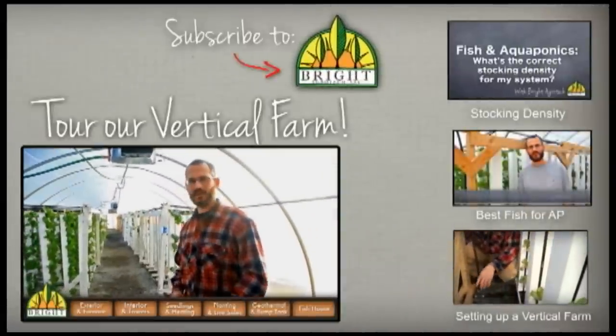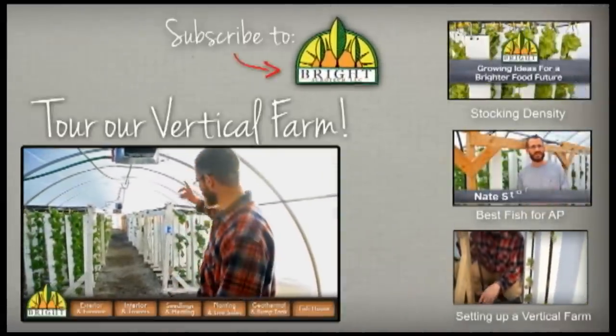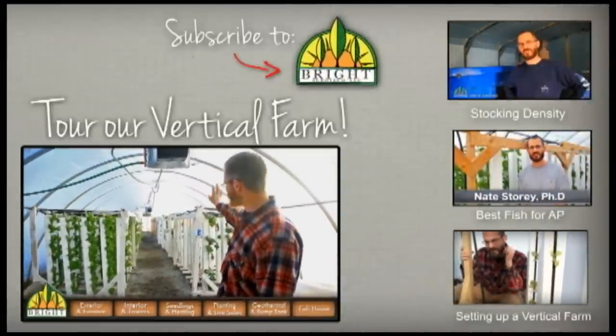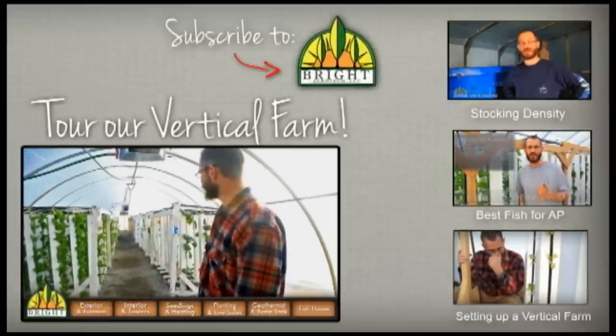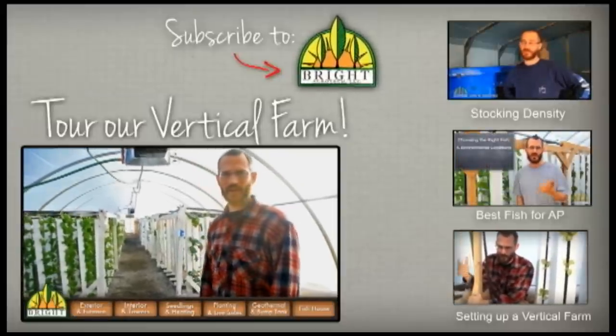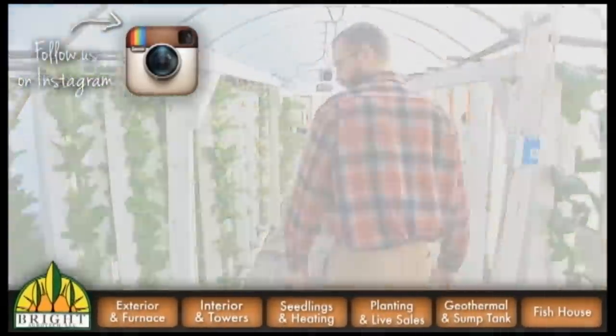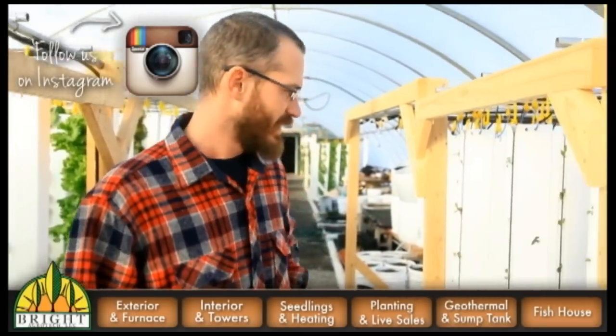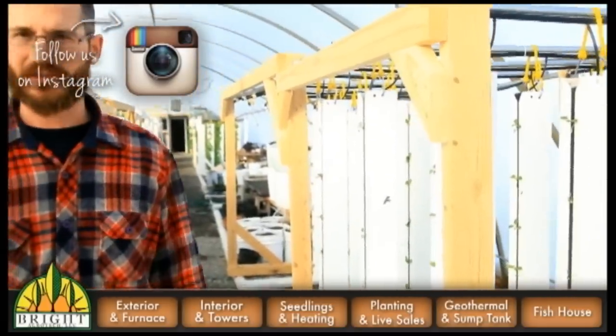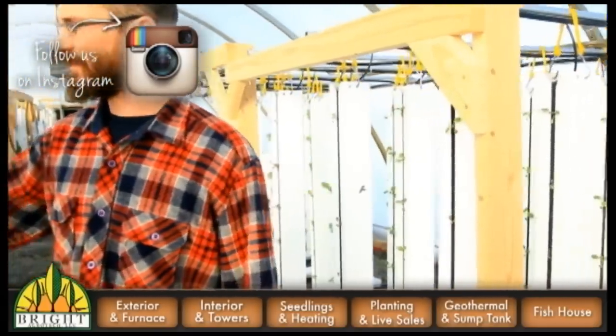Alright. So this is our greenhouse here. We just came in through the front door and this is kind of looking east down the rows and columns of towers here. Come on in and I'll explain how everything works. So now we're at the far end of the greenhouse and you can see some of the new towers that have just gone in this last week. And some of the stuff that went in the week before over here.